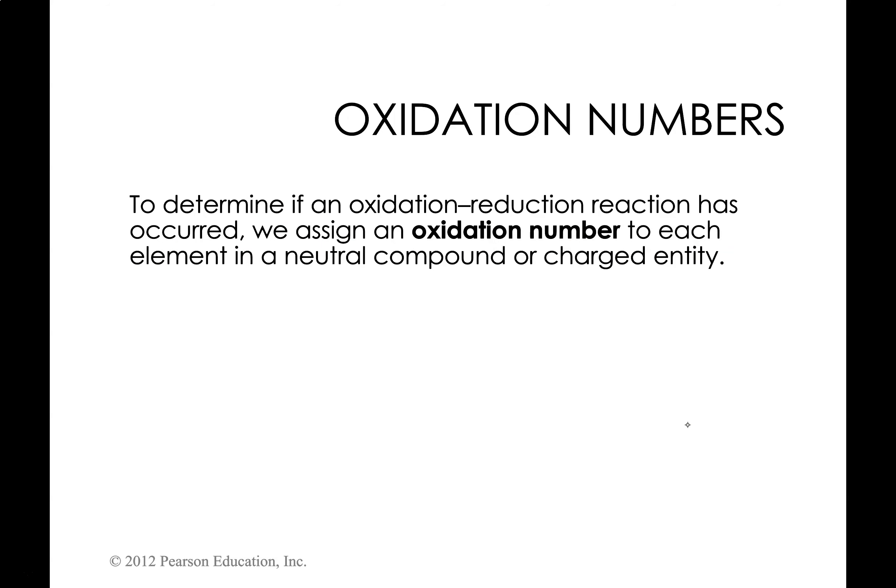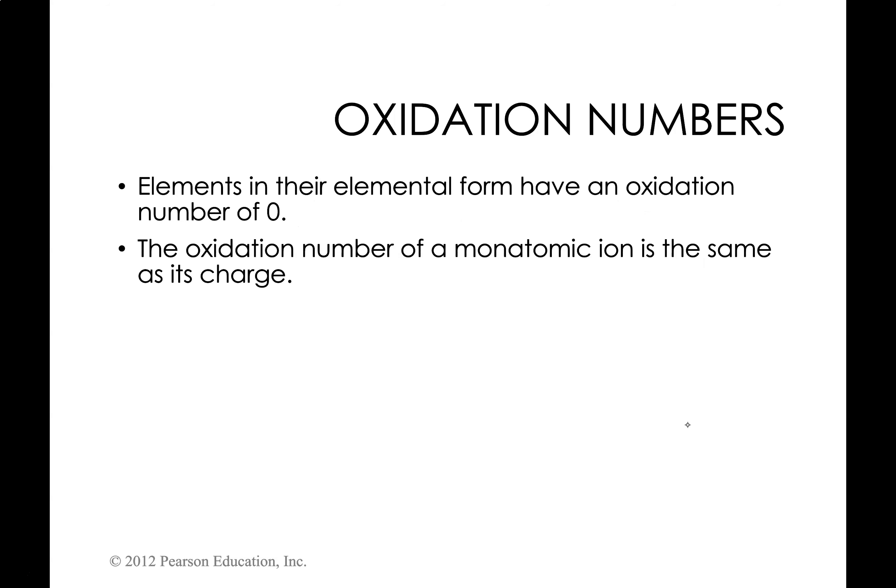Please do not get oxidation-reduction reactions, or redox reactions for short, mixed up with precipitation reactions. In precipitation reactions, we use solubility rules to identify what is solid; in redox reactions, we do not. In precipitation reactions, charges do not change from reactants to products. In oxidation-reduction reactions, ionic charges do change — that is why we have to track oxidation numbers. In the next few slides, we'll see rules for assigning oxidation numbers.